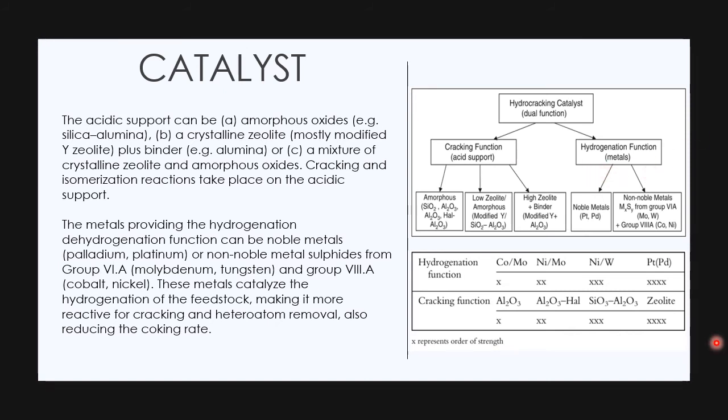The acidic support can be 1. Amorphous oxides, for example silica alumina, or 2. A crystalline zeolite, mostly modified by zeolite plus binder like alumina, or 3. A mixture of crystalline zeolite and amorphous oxides. Cracking and isomerization reactions take place on the acidic support. The metals providing the hydrogenation function can be noble metals like palladium, platinum, or non-noble metal sulfides from group 6A like molybdenum tungsten, and group 8A like cobalt nickel. These metals catalyze the hydrogenation of the feedstock, making it more reactive for cracking and heteroatom removal, also reducing the coking rate.